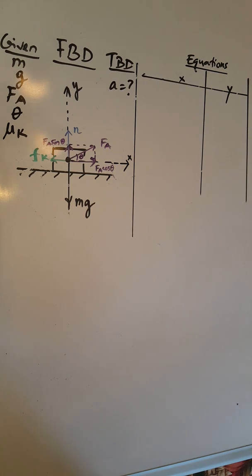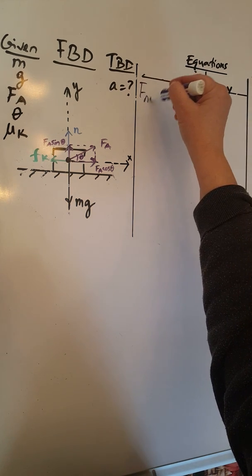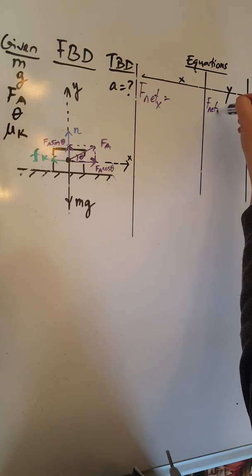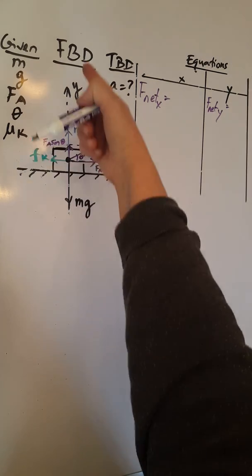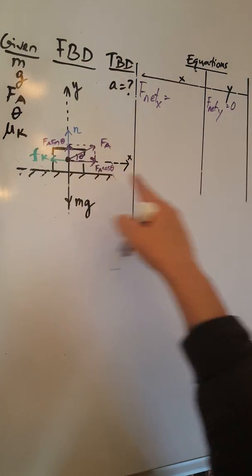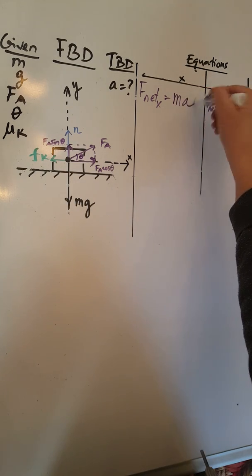Once we have that, we're going to put the equations together based on Newton's second law of motion: F net equals M times A. However, we're going to have an F net X and we're going to have an F net Y. Since the object does not accelerate on the y-axis, F net Y will be zero. Since the object accelerates on the x-axis, F net X will be M times A.